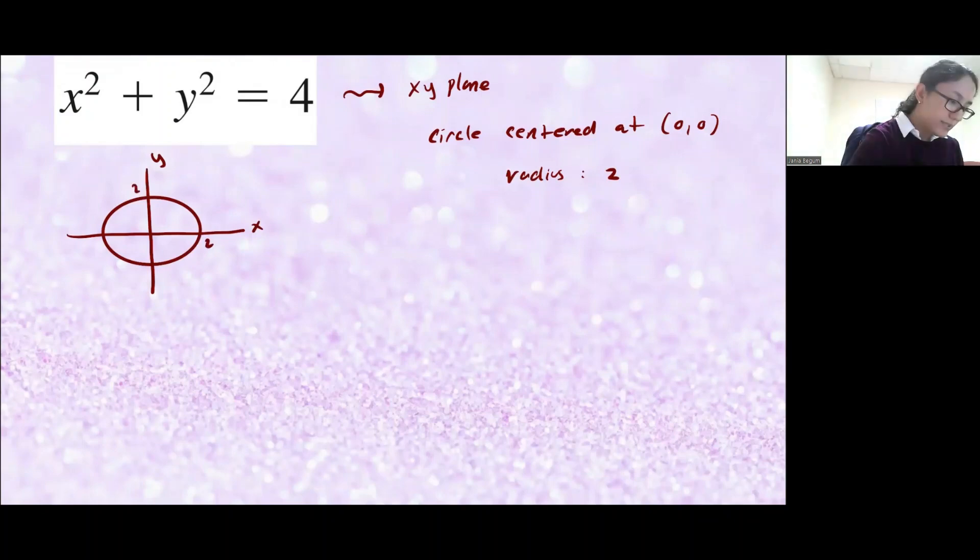Now if you were to put this in the xy and z plane, so here's my xy and z. This is x, this is y, and this is z. The circle is sitting right in the xy plane and it's going to extend along the missing variable, which is z. So it would look something like this.